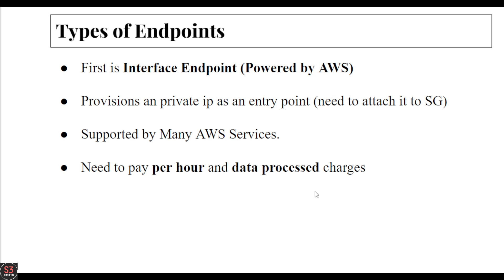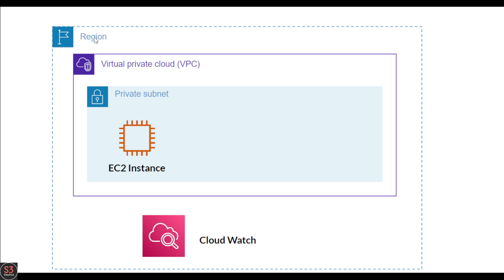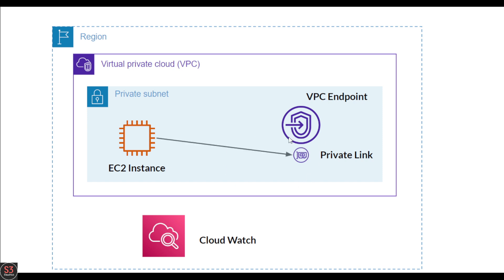Here's how the interface endpoint works: we have a region with a VPC, a private subnet, and a private instance. The private instance wants to access CloudWatch. We create a VPC endpoint with a PrivateLink, and through that PrivateLink with a private IP, the private instance is able to connect to the CloudWatch service. That is how the interface endpoint works.